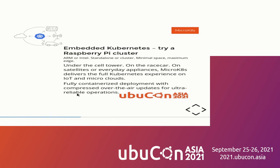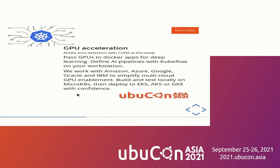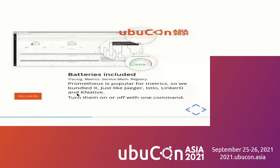If you use vanilla K8s, you need to do a lot of installation instructions and configuration. But for MicroK8s, a very simple example is GPU isolation — this is auto-detected. It works with Amazon, Azure, Google, IBM, and many other clouds. You can install and auto-detect GPUs, so you can easily install the platform. There are also unique features like Prometheus, Jaeger, and Istio. Prometheus is the most popular, and MicroK8s already includes Prometheus.